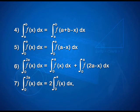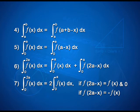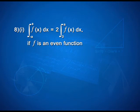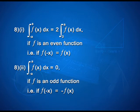Property 7: ∫₀²ᵃ f(x) dx = 2·∫₀ᵃ f(x) dx if f(2a−x) = f(x). Property 8: ∫₋ₐᵃ f(x) dx = 2·∫₀ᵃ f(x) dx if f is an even function, i.e., f(−x) = f(x). And ∫₋ₐᵃ f(x) dx = 0 if f is an odd function, i.e., f(−x) = −f(x).